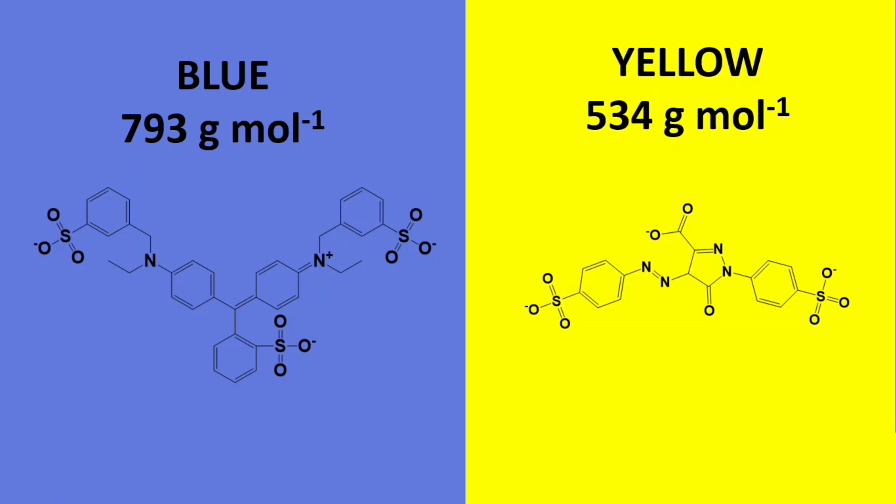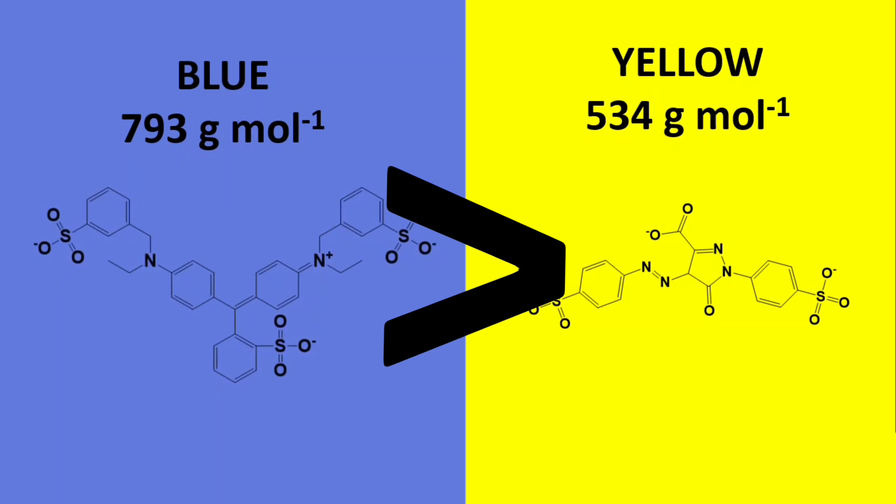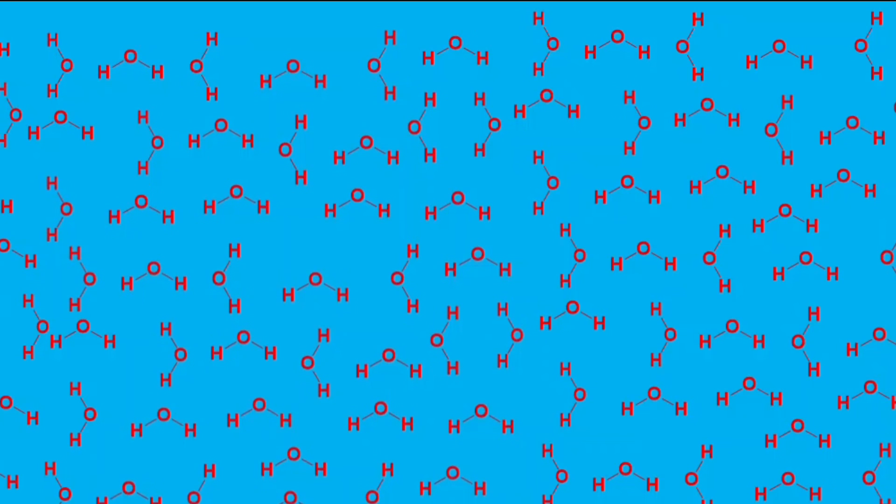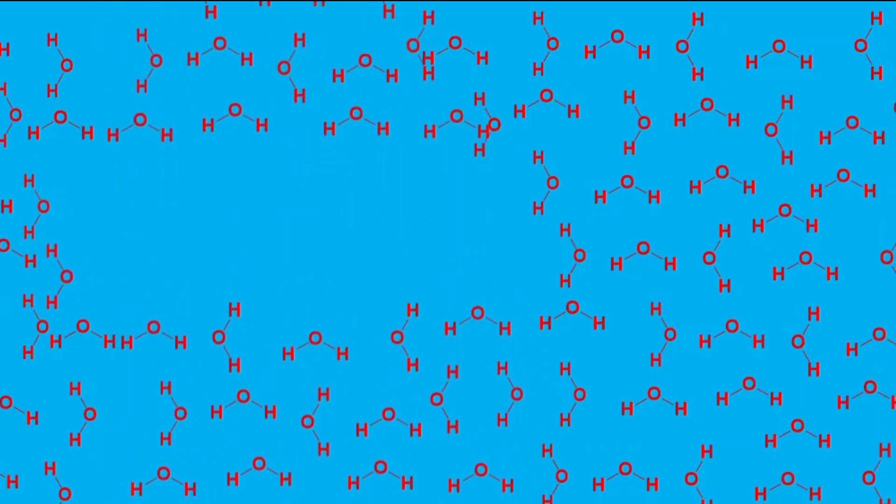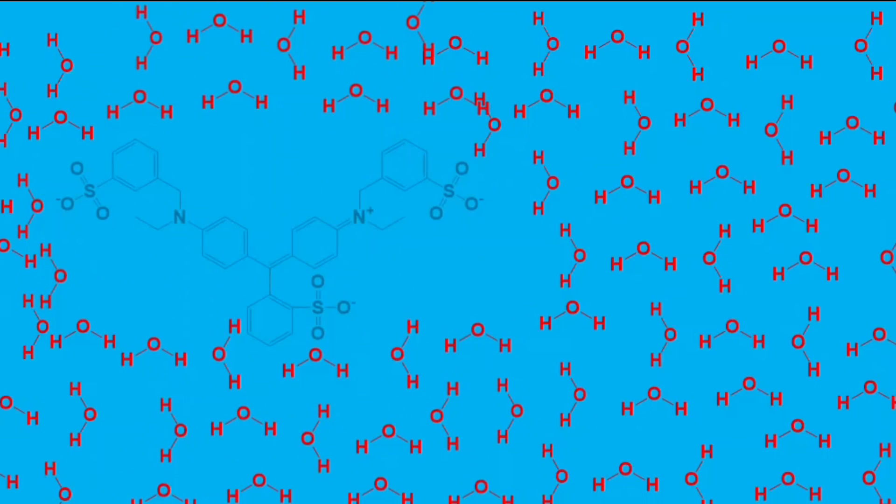Comparing the molecular structure of each dye, we see that blue dye molecules are 33% bigger than the yellow ones. And size matters a lot. Large molecules have a hard time dissolving in water because in order to do so they have to push apart water molecules. And that takes a lot of energy.